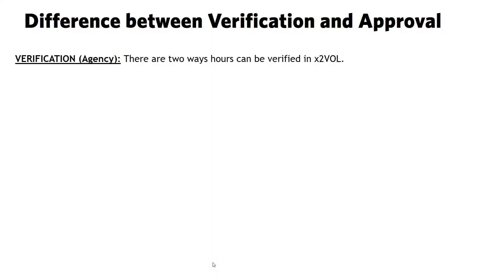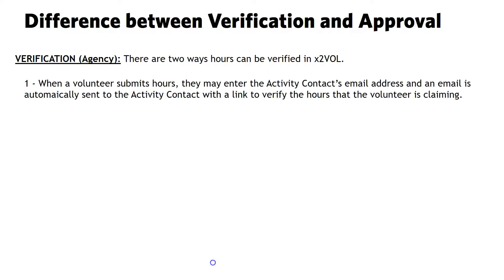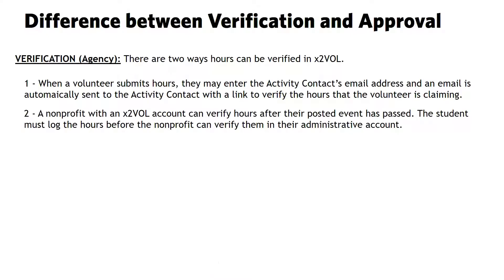Verification is done by the supervisor at the service location that the volunteer attends. This can be done in two ways in our system. The first is when a volunteer submits hours via a personal project, where they put in all the information for that entry. They can include an activity contact's email address, and an email is automatically sent to that contact with a link to verify the hours being claimed. A non-profit with an X2Vol account can also verify hours through their system after an event has passed. The student must log those hours before the non-profit can verify them in their administrative account.